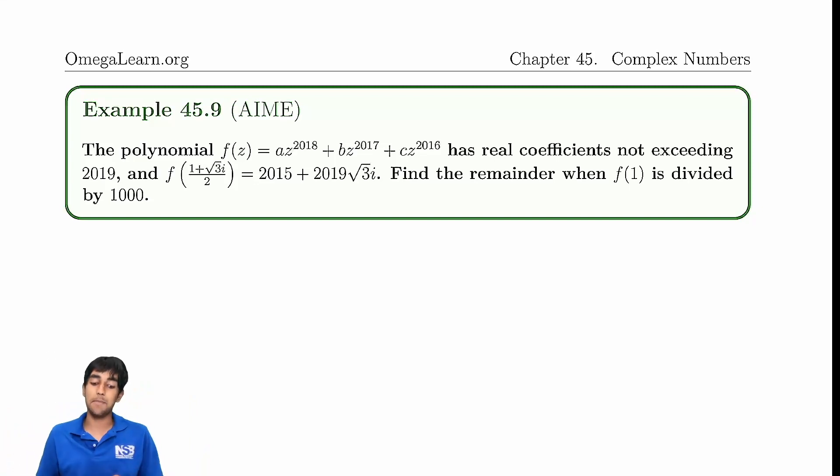Let's start off with this example from the AIME, and I have fond memories of this because I remember this problem from when I did it in the contest. The polynomial, this, a times z to the 2018, plus b times z to the 2017, plus c times z to the 2016. Right off the bat, you should be like, we can just factor out z to the 2016. That should be like the first thing you think of, because why not? I mean, we have this as every term. Now we have a quadratic in terms of z, which is pretty cool.